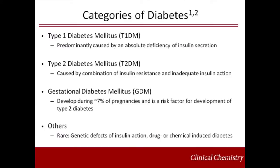Diabetes is defined by the American Diabetes Association as a group of metabolic diseases characterized by hyperglycemia resulting from defects in insulin secretion, insulin action, or both. Several pathogenic processes are involved in the development of diabetes, and the disease is classified into several categories.